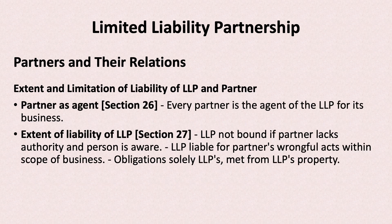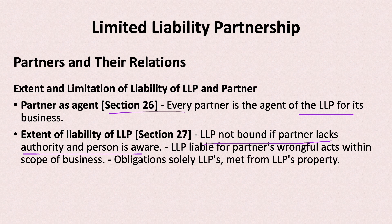As a legal entity, what is the relationship between LLP and its partners? According to Section 26, every partner is the agent of the LLP for its business. Contracts made for business bind all partners and the LLP. However, LLP is not bound if a partner lacks authority and the third party is aware that the partner does not have that authority to form a contract with them on behalf of LLP.